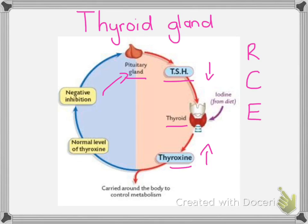This will continue until we return to the original homeostatic level. If thyroxine dips too low again, we start the process all over again — more thyroid stimulating hormone is made, the thyroid then makes more thyroxine, and that increase in thyroxine starts the negative feedback loop once more. Whenever we do these explanations around homeostasis, we should always include at the end of our answer that we have returned back to our norm or set point.